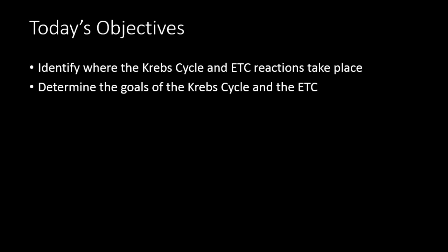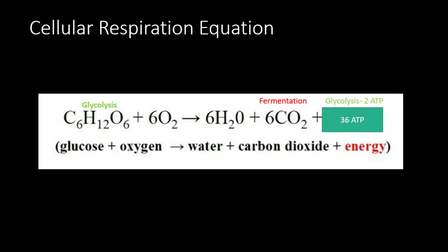Let's take a look at the cellular respiration equation where we left off in the last tutorial. Glucose plus oxygen yields water, carbon dioxide, and energy. So far we looked at glycolysis and fermentation. We determined that the starting point for breaking down glucose is glycolysis, where it's broken down to pyruvic acid, and that glycolysis gives us two ATP molecules towards our 36 ATP total.